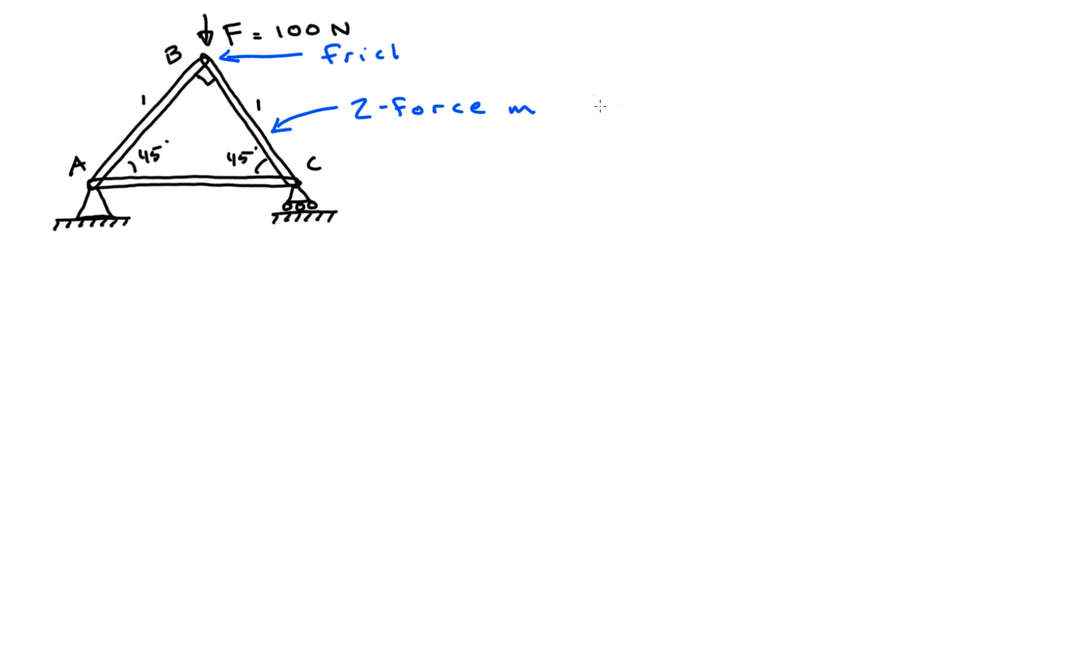We'll analyze this truss by doing a force balance at each joint, starting with joint A. This is a pinned support, so we need to include the reaction forces in both the horizontal and vertical directions. Additionally, we sketch arrows representing the forces in the members AB and AC. It's smart to always draw the arrows away from the joint as a convention. This keeps all of your force diagrams consistent.